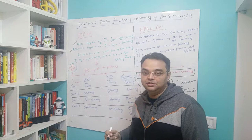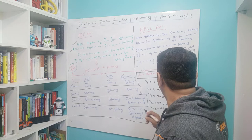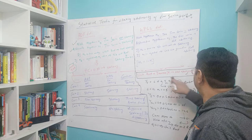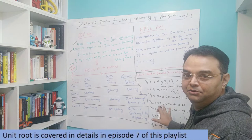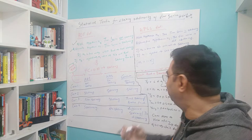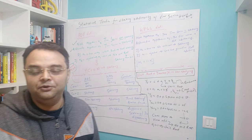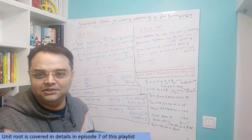If the null hypothesis is true — meaning the time series is not stationary — in the back end it works on a concept called unit root. If you have a unit root in a time series, it's danger. Unit root means it is not stationary. Why is non-stationarity dangerous? Because in time series we need stationarity of the data in certain models.